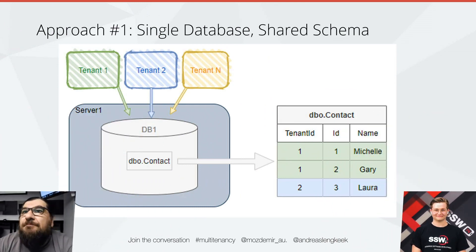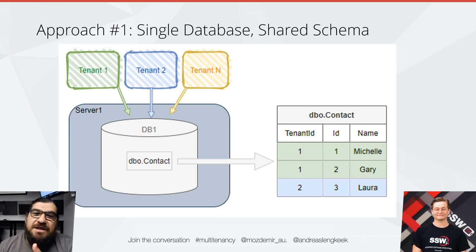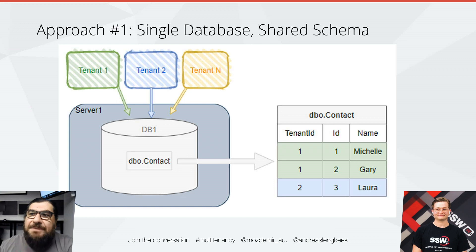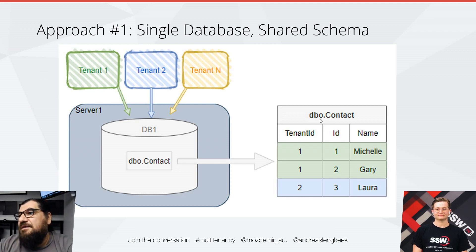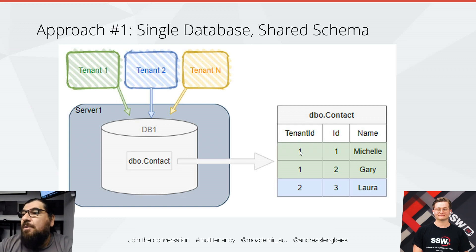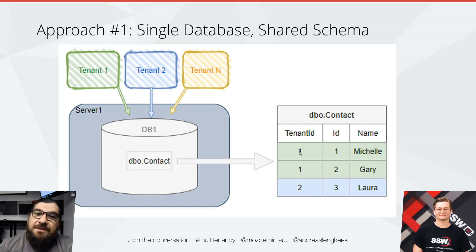One approach could be a single database with a shared schema. What that means is you'd have a single database where everyone would be sharing the same orders table, the same invoices table, or the same customers table. But logically within those tables, you'd use a tenant key or a tenant ID. In this database design for contact, we have tenant ID, ID, and name. You could have tenant ID 1 and 2, and the actual client ID would be 1, but they'd all be logically separated by the tenant ID.